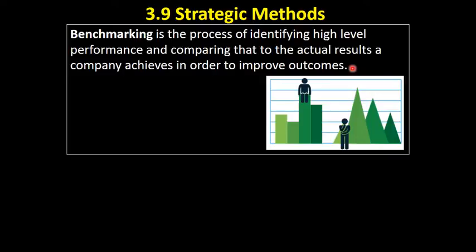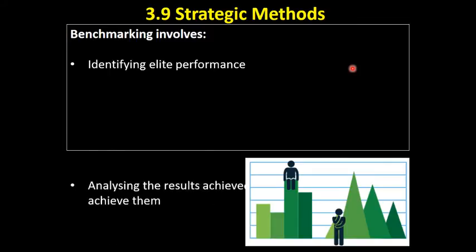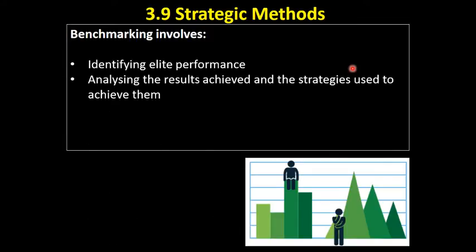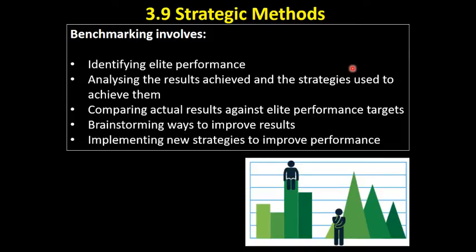The point is that we're trying to improve our own outcomes, so we want to investigate what those elite performers are doing — not necessarily to copy, but to see what's working and what we could implement. Benchmarking involves identifying elite performance, analyzing the results they achieve and the strategies they use, and then comparing our actual results against those elite performance targets so we can brainstorm ways to improve.